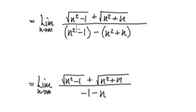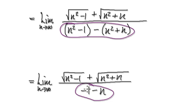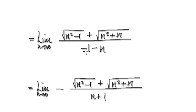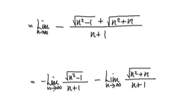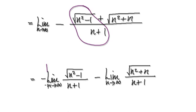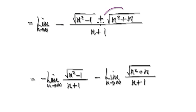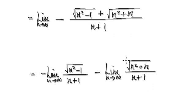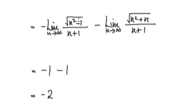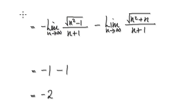Let me tidy this up. Factor out the minus here so this becomes positive. We can now break this up as one fraction — don't forget the minus — and then another fraction. That gives you this. Now as n tends to infinity, this number one is negligible and insignificant as n gets very big, so we can pretty much ignore it.